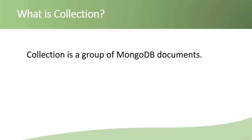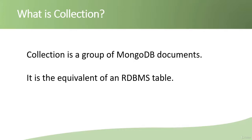A collection is a group of MongoDB documents. Documents are pretty much like the rows we use in tables — it is the collection of documents or records. For example, we have a collection of employees. The data of each employee is known as a document, and when we gather all the data together, that is a collection of employees.